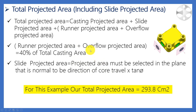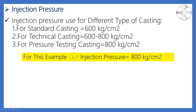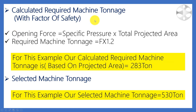I talked about this in detail in our video on how to calculate tonnage, so if you haven't seen that video please watch our die casting die design playlist. Next is injection pressure. We use different values for different types of casting: for standard casting we use 600 kg/cm², for technical casting we use 600 to 800 kg/cm², and for research testing casting we use 800 kg/cm².